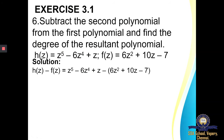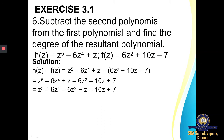I also insist all students to write down the second polynomial within the bracket only while solving the sum. Next step: we have to write the first three terms as they are. Then what happens: minus into plus 6Z square gives me minus 6Z square; then minus into plus 10Z gives me minus 10Z; then minus into minus gives me plus 7.